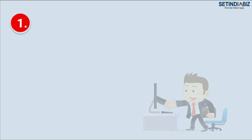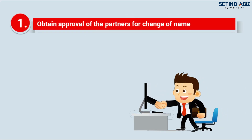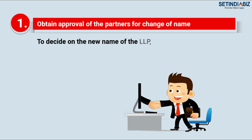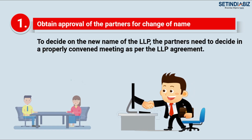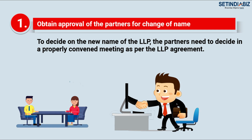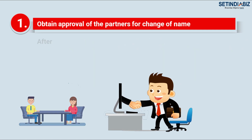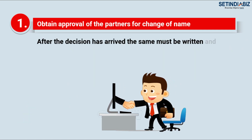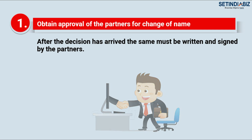Step 1: Obtain approval of the partners for change of name. To decide on the new name of the LLP, the partners need to decide in a properly convened meeting as per the LLP agreement. After the decision has been arrived at, the same must be written and signed by the partners.